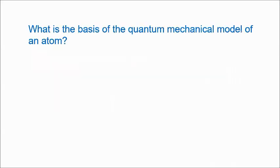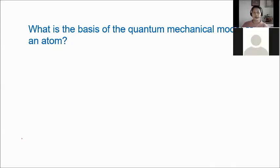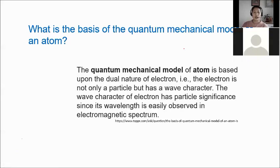The quantum mechanical model of an atom is based upon the dual nature of the electron — electrons are treated not only as particles but also as waves. The wave character of the electron has particle significance since its wavelength is easily observed in the electromagnetic spectrum.